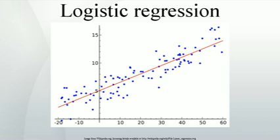Coefficients. After fitting the model, it is likely that researchers will want to examine the contribution of individual predictors. To do so, they will want to examine the regression coefficients. In linear regression, the regression coefficients represent the change in the criterion for each unit change in the predictor. In logistic regression, however, the regression coefficients represent the change in the logit for each unit change in the predictor. Given that the logit is not intuitive, researchers are likely to focus on a predictor's effect on the exponential function of the regression coefficient — the odds ratio. In linear regression, the significance of a regression coefficient is assessed by computing a t-test. In logistic regression, there are several different tests designed to assess the significance of an individual predictor, most notably the likelihood ratio test.